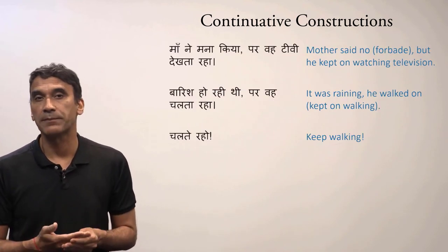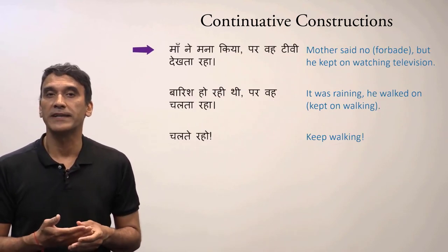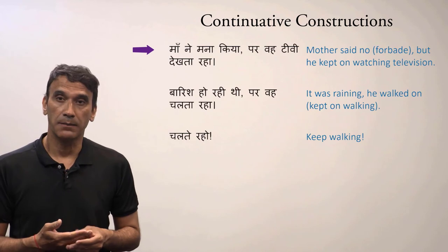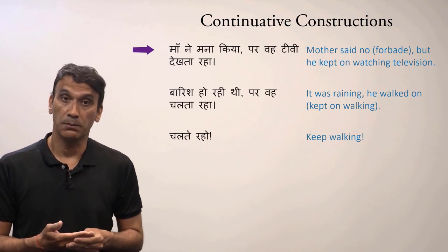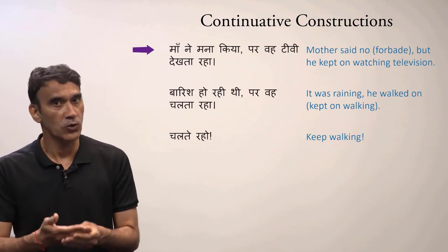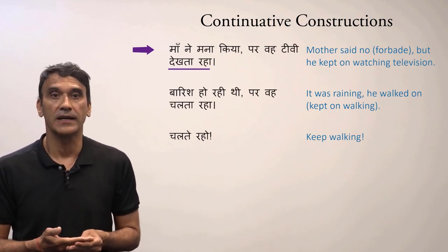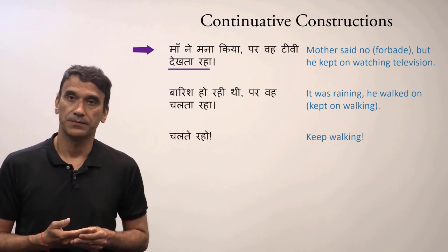One more example: MAANE MANA KIYA PAR WO TV DEKTA RAHA — mother said no, mother forbade, but he kept on watching television. WO TV DEKTA RAHA — he kept on watching television.